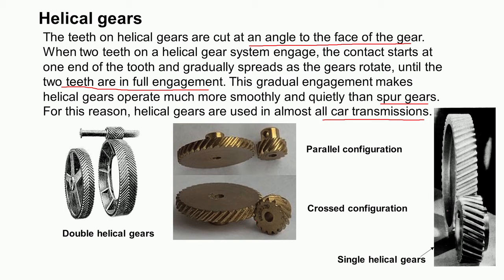Helical gears are used in car transmissions. The bigger one is called the gear and the smaller one the pinion. They can be arranged in parallel configuration, where the two axes are parallel, or in crossed configuration. Double helical gears have teeth angled in both directions.